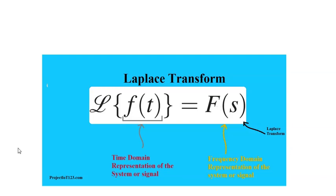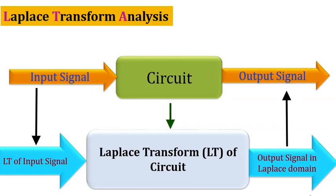We do a lot of operations in the time domain: we add signals, subtract signals, multiply signals, divide signals, integrate signals, differentiate signals, and convolve signals in the time domain. Some of these things are pretty easy — adding two signals is easy, multiplying two signals is no problem, dividing two signals is not a big deal. But if you want to do differentiation, it can be tricky. Integration is even trickier, and convolution can be time-consuming and increase the risk of making mistakes.